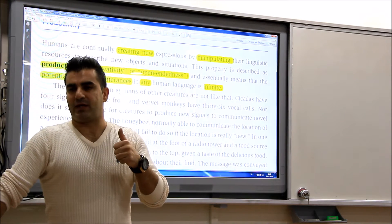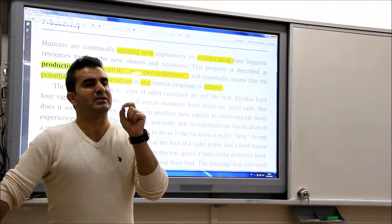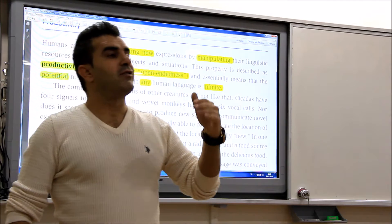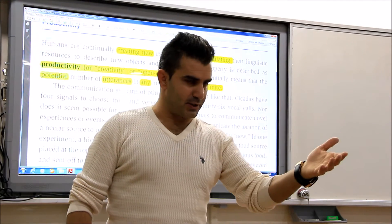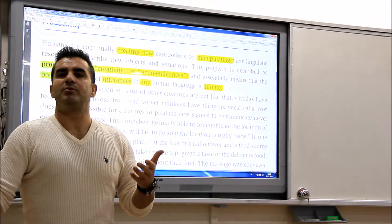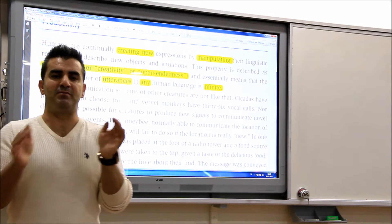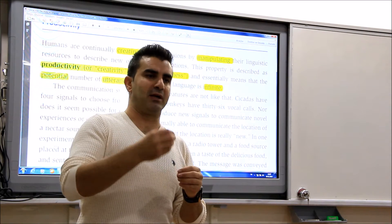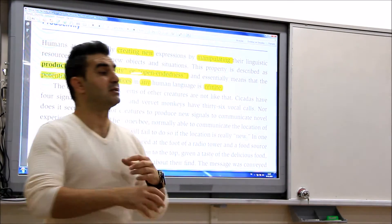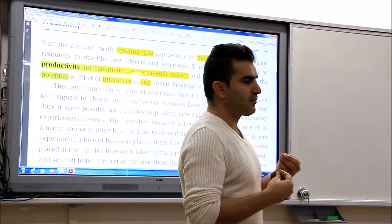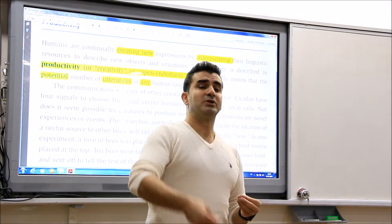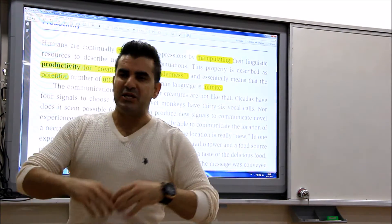However, animals cannot do that. The signals conveyed by animals are finite — that means limited. So, what do we humans do? We can produce language. We combine the sounds we produce and use those sounds in different words, different expressions. And we do this without limit. We can produce approximately 44 different sounds, but from the combinations of those 44 sounds...